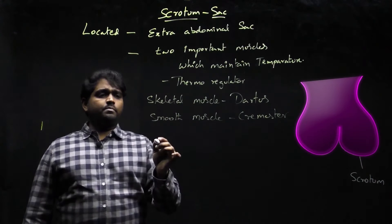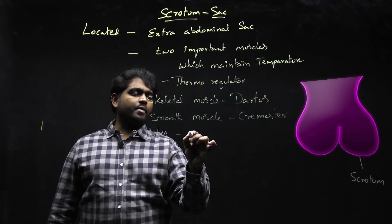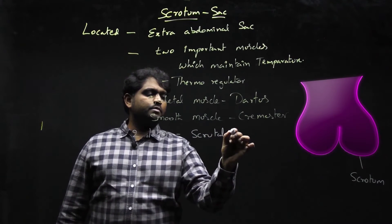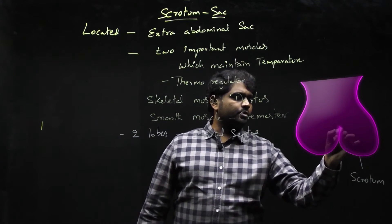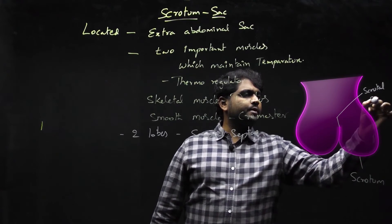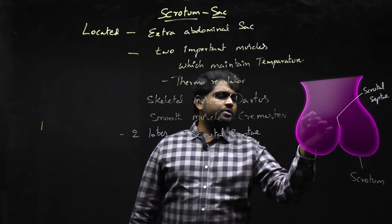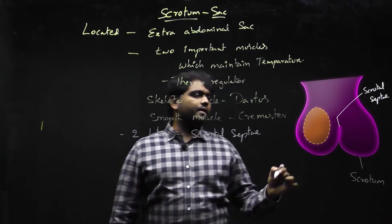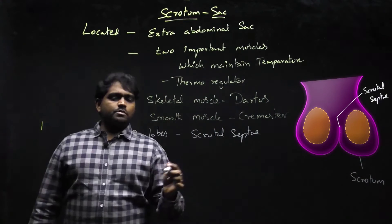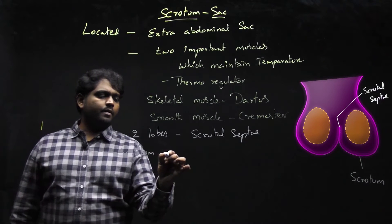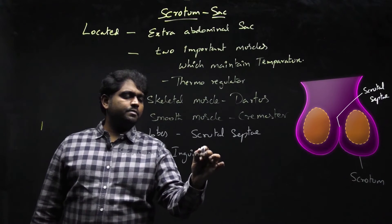The scrotum is divided into two lobes, separated by the scrotal septum. The scrotal sac is occupied by the testes, which reside inside the scrotum. The scrotum hangs by the help of the inguinal canal.